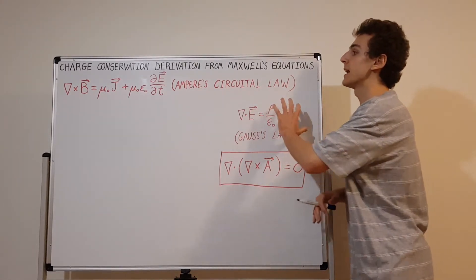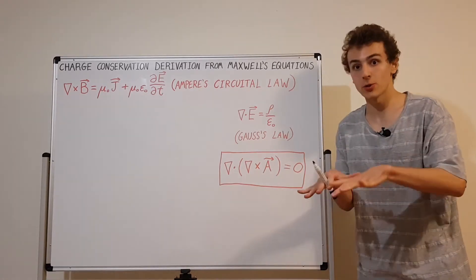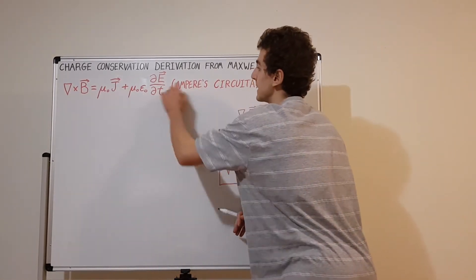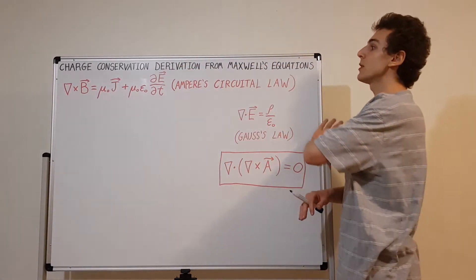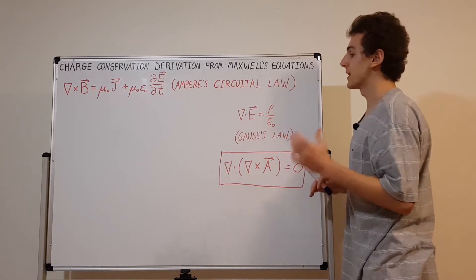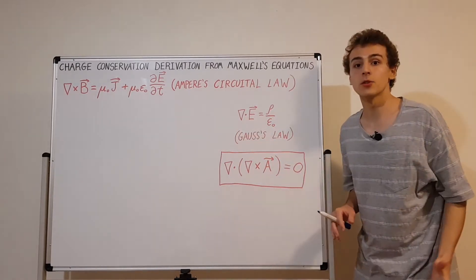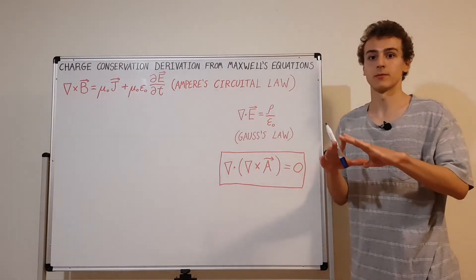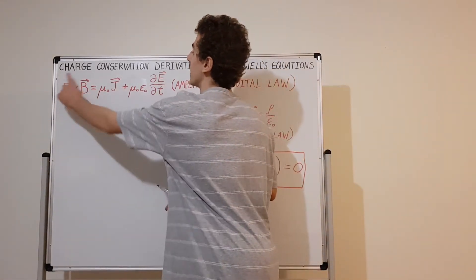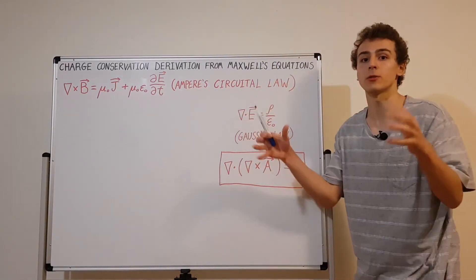We're looking at the differential form of these equations, not the integral form. The integral form is useful when you have some distribution of charge or currents and need to calculate the J's and E's. Because we're doing a purely theoretical manipulation, we just need the differential form using the del operator — the upside-down triangle, sometimes called nabla. The dot product gives the divergence; the cross product gives the curl.